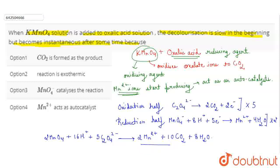Right. So, therefore, when Mn2+ starts producing and starts acting as an auto-catalyst, the decolorization, which is slow in the beginning, becomes instantaneous after some point of time and the reaction starts increasing with time. Also, the endpoint of this reaction is colorless to light pink. Out of these four options, the right one is option 4: Mn2+ acts as an auto-catalyst. Thank you.